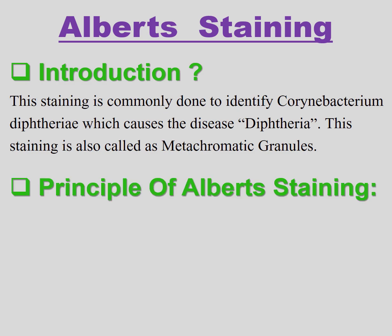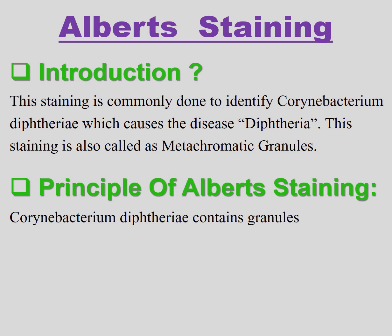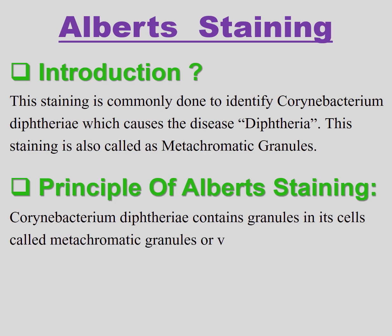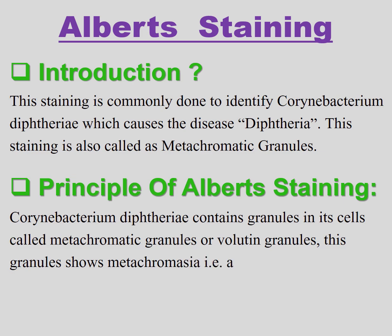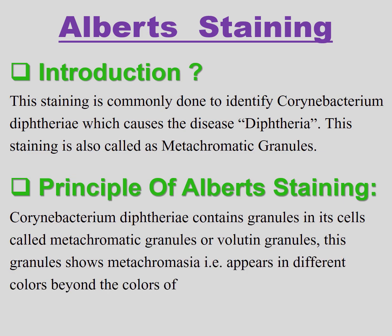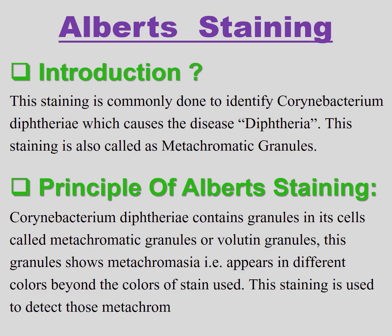The principle of Albert's staining: Corynebacterium diphtheriae contains granules in its cells called metachromatic granules or volutine granules. These granules show metachromasia, meaning they appear in different colors beyond the color of the stain used. This staining is used to detect those metachromatic or volutine granules.